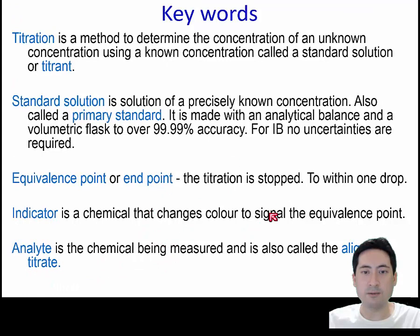That's called the titrant and we're measuring it with the unknown concentration, which is the analyte aliquot or titrate. Often we know that the reaction is finished because we have some sort of chemical that changes color and we call that the end point, the equivalence point. This substance of known concentration is often called the standard solution or the primary standard and that is regarded as 100% accurate. Quite a lot of terms here. If you're confused, go back and have a look at this slide to see what it's talking about if you're reading a method.